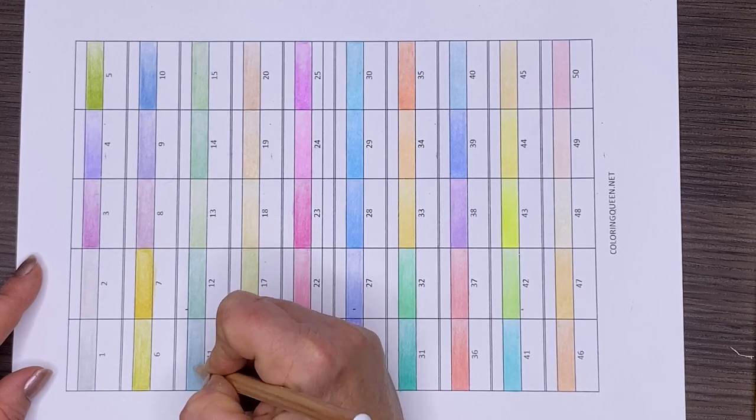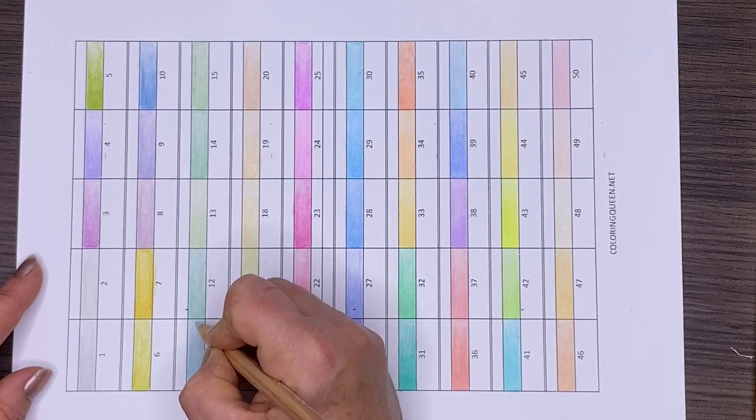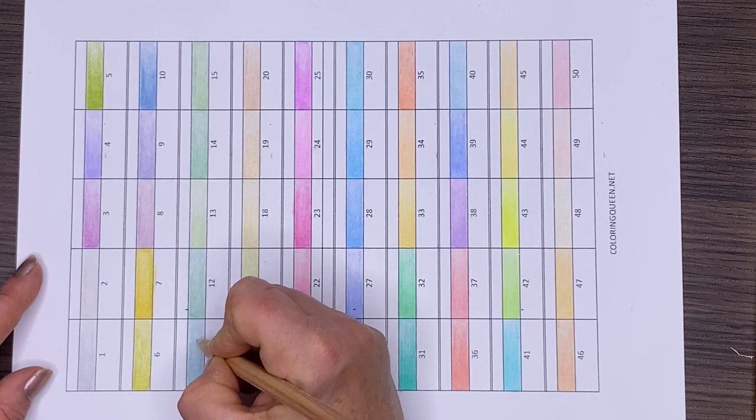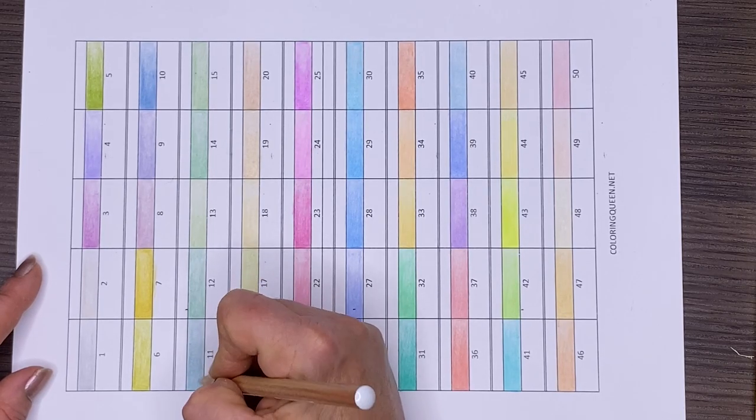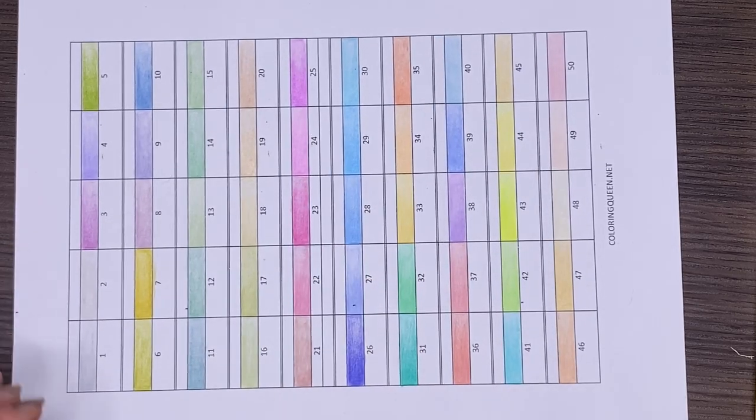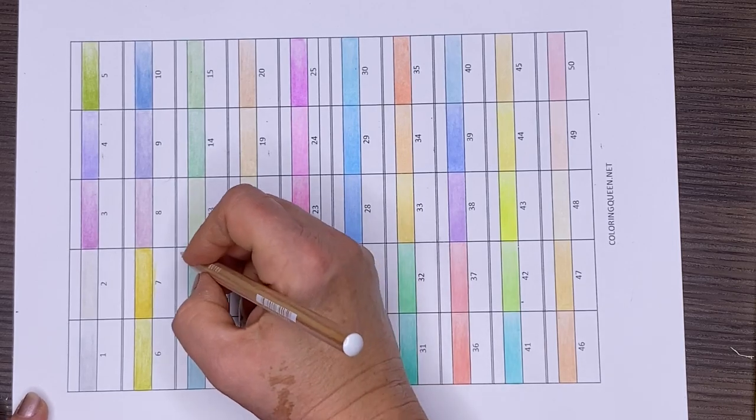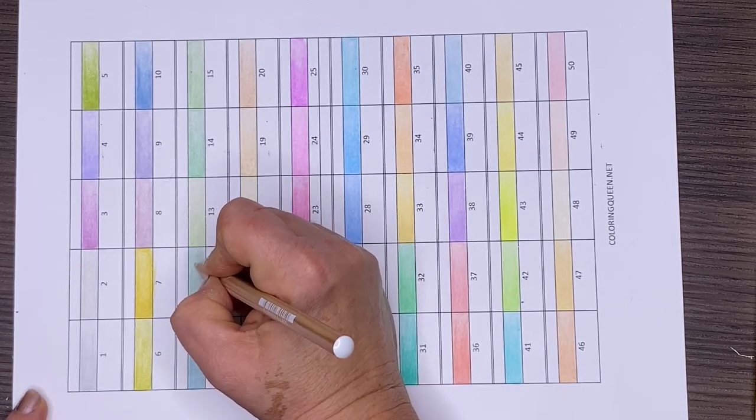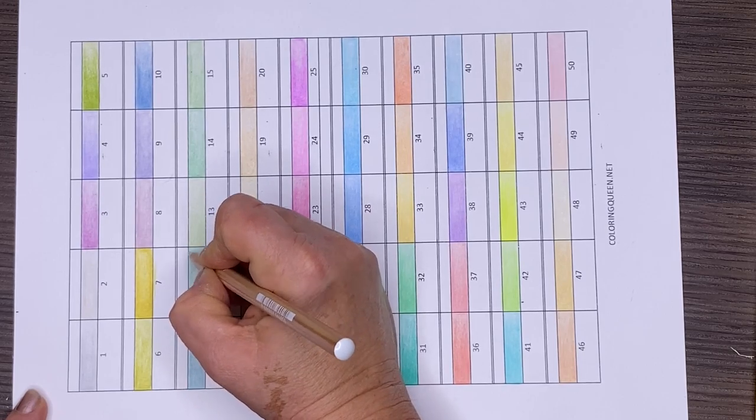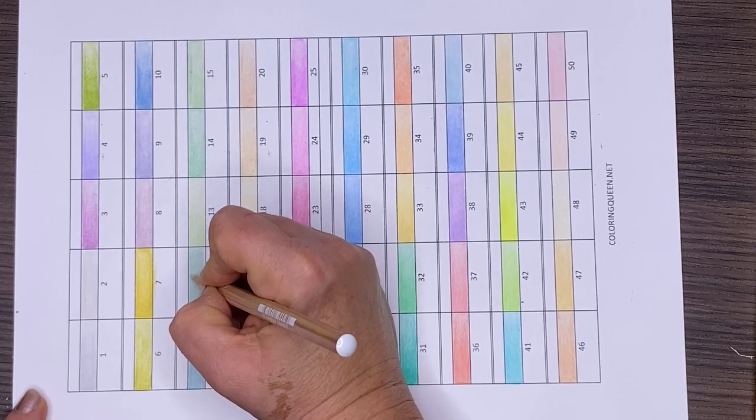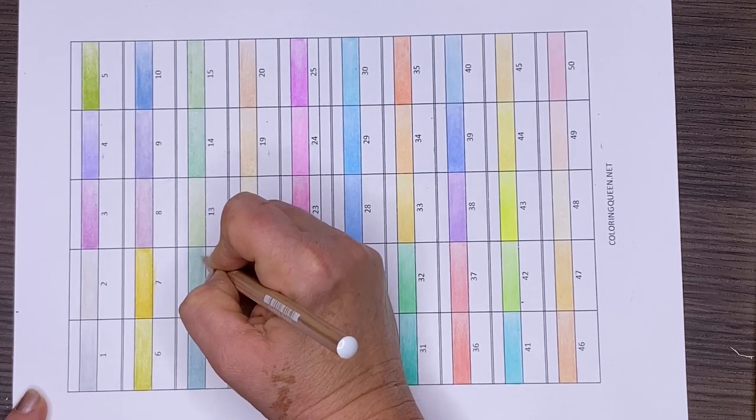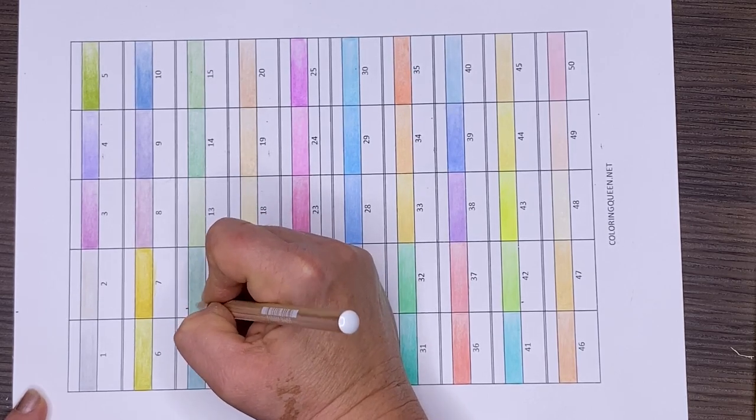There are no lightfastness ratings on these pencils because they're student grade. I'll give you some pros and cons: They're cheap, which is a pro, but depending on where you live, they might cost more to ship. There's no white, black, or other colors, so you'll need another set of pencils to complement these.